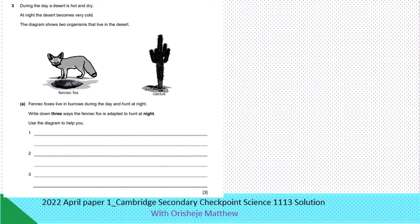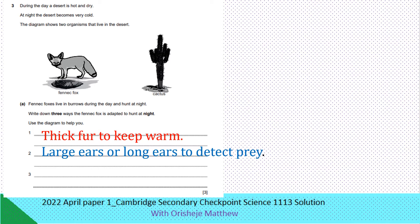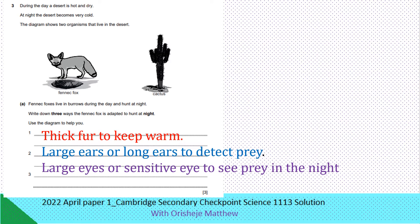A desert is hot and dry during the day; at night the desert becomes very cold. The diagram shows two organisms that live in the desert. The fennec fox lives in burrows during the day and hunts at night. Write down three ways the fennec fox is adapted to hunt at night. They are thick-furred to keep them warm because the night is very cold, have large or long ears to detect prey, and large or sensitive eyes to see prey in the night.